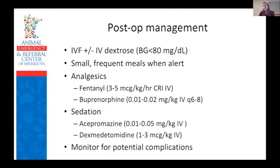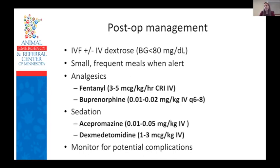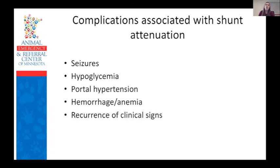After shunt attenuation, patients are maintained on IV fluids until they are eating and drinking. Dextrose is added to fluids when blood glucose is less than 80. Patients are monitored for hypoglycemia, hypothermia, delayed anesthetic recovery, hemorrhage, seizures, and signs of portal hypertension. Animals usually require opioid analgesics for several days post-op. Sedation with low-dose acepromazine or dexmedetomidine may be necessary if dogs are vocalizing; acepromazine does not increase the risk of seizures after shunt surgery. These patients are typically kept 24 to 72 hours in the hospital depending on recovery.